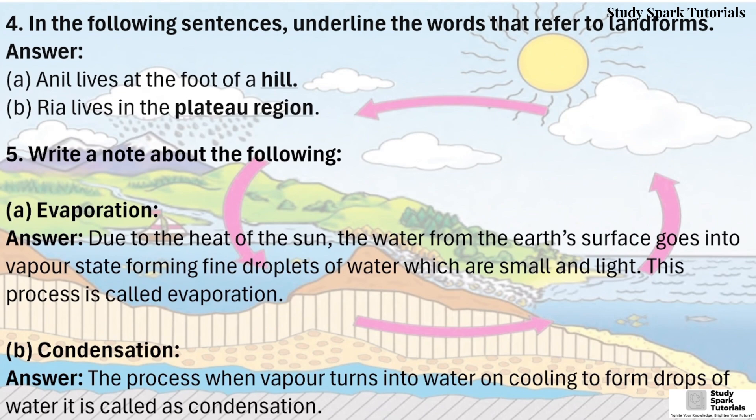Question 5: Write a note about the following. Question A: Evaporation. Answer: Due to the heat of the sun, water from the earth's surface goes into vapour state, forming fine droplets of water which are small and light. This process is called evaporation.